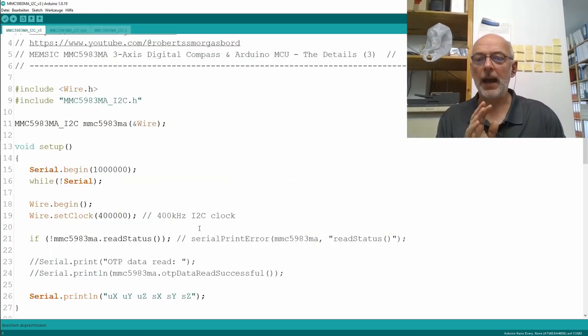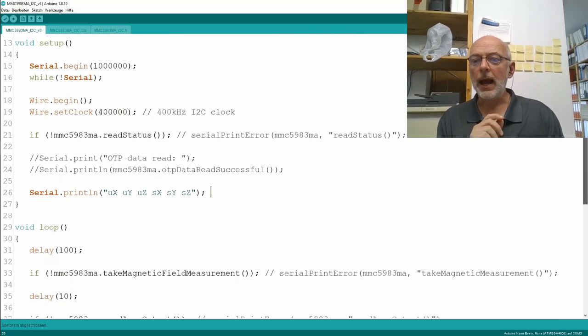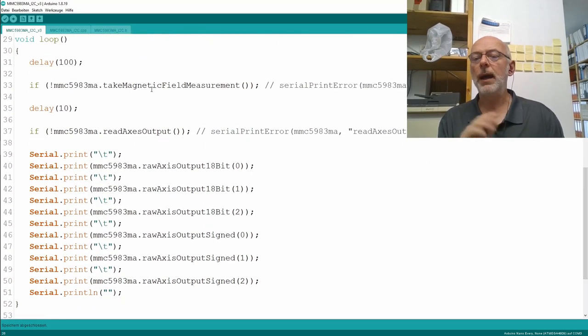Now, in the sketch itself, I commented out everything that would print anything onto the serial port, because I want to use the serial plotter. Instead, I'm printing out here labels for six lines on our serial plotter. That is unsigned X, Y, Z and signed X, Y, Z. And then in the loop, I have a delay of 100. I take my magnetic field measurement. I read my axis output and then I print out the raw 18-bit values from the X, Y and Z axis and the signed values of my X, Y and Z axis. And we just trust that raw axis output Gauss is working.